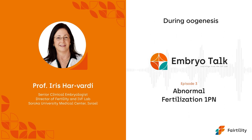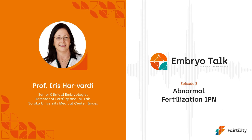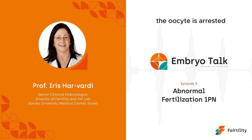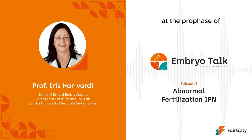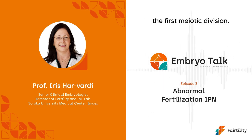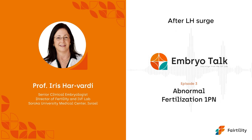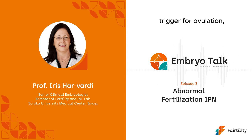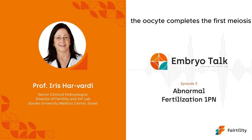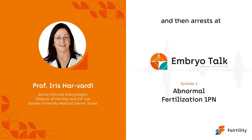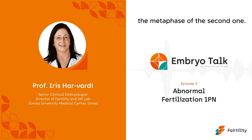During oogenesis, the oocyte is arrested at the prophase of the first meiotic division. After an endogenous or any exogenous trigger for ovulation, the oocyte completes the first meiosis and then arrests at the metaphase of the second one.